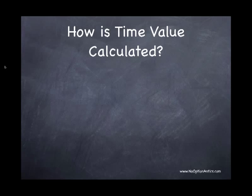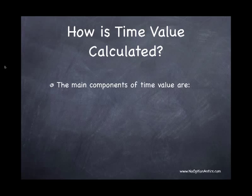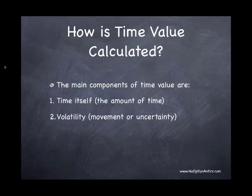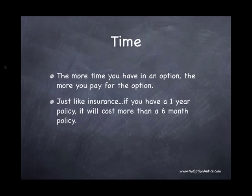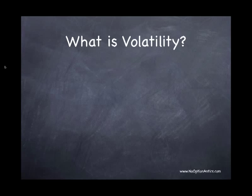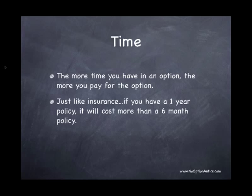That's how your option gets its pricing. Now let's talk about how time value is actually calculated. There are a couple of components: one is the amount of time itself, and the second is volatility. The more time you have in an option, the more you pay for the option — plain and simple. Just like insurance: if you were looking at a one-year policy versus a six-month policy, you would always pay more for the one-year policy.